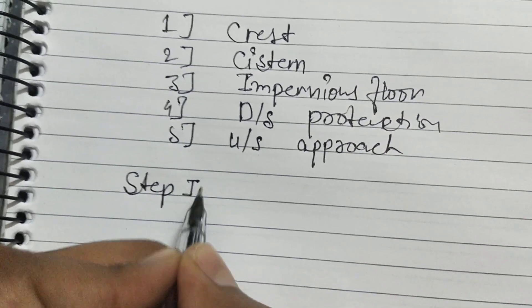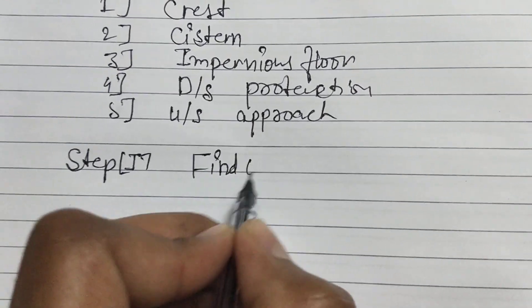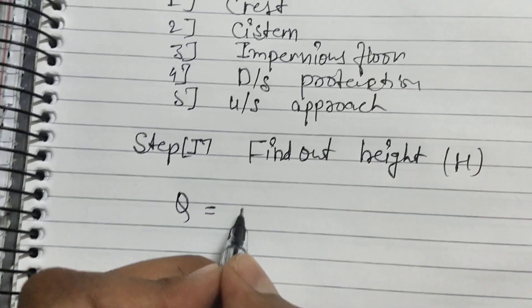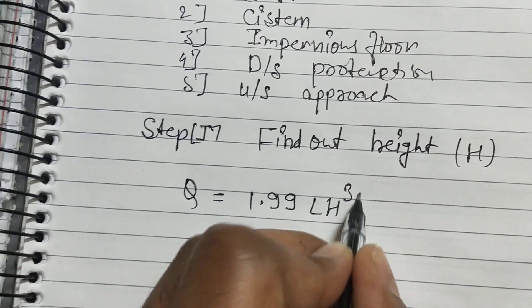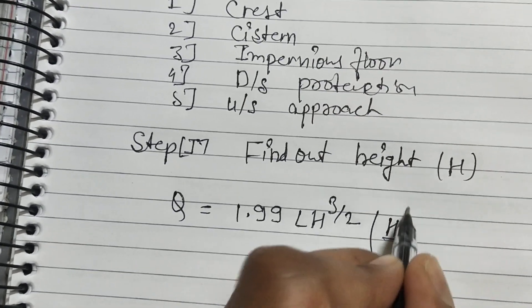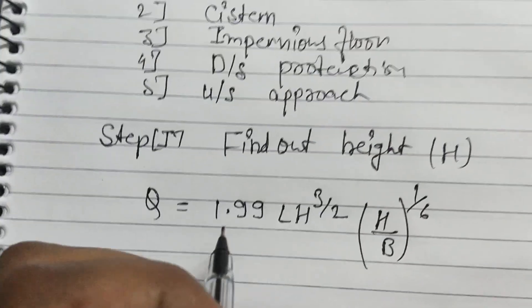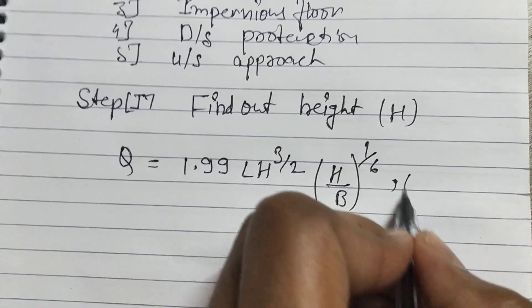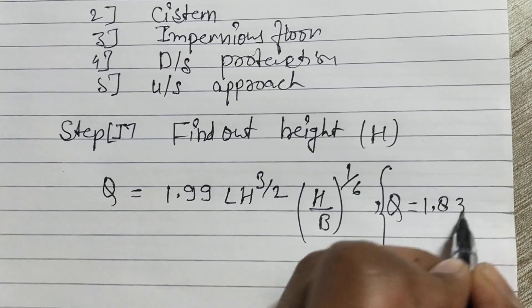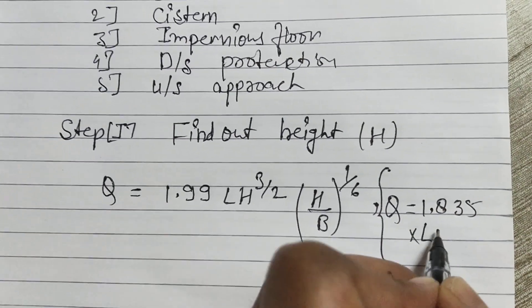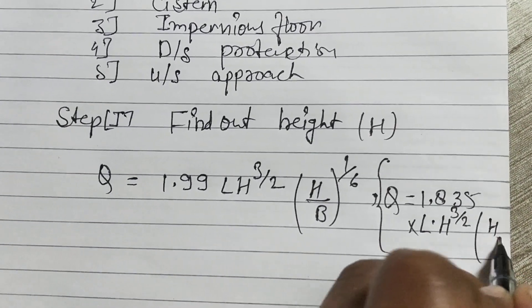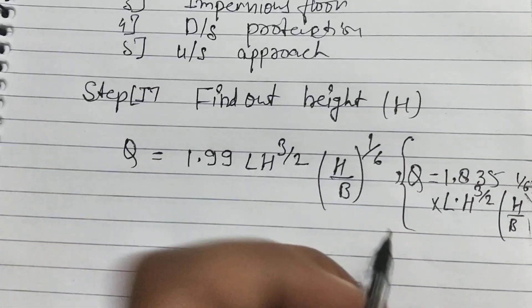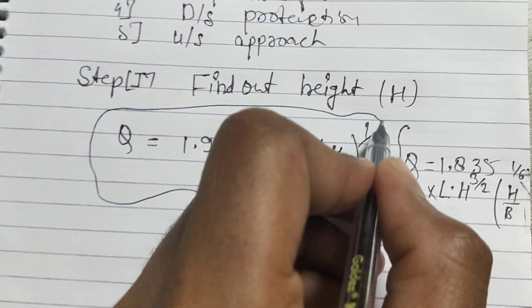Now let's begin the design system. Step first: find out height, that is capital H. We know the formula of discharge Q = 1.99 × L × H^(3/2) × (H/B)^(1/6). Basically this is designed for the trapezoidal, but in some conditions it may be rectangular. For the rectangular, this formula will not be used. The formula will be changed. For rectangular: Q = 1.835 × L × H^(3/2) × (H/B)^(1/6). This formula is for rectangular crest, but basically this is used because everywhere you will get trapezoidal.